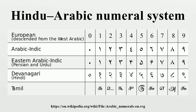Positional notation: The Hindu numeral system is designed for positional notation in a decimal system. In a more developed form, positional notation also uses a decimal marker and a symbol for digits that recur ad infinitum. In modern usage, this latter symbol is usually a vinculum. In this more developed form, the numeral system can symbolize any rational number using only thirteen symbols.